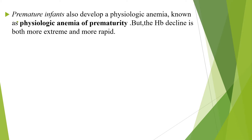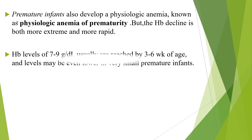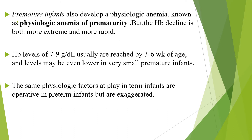Premature infants also develop a physiologic anemia, known as physiologic anemia of prematurity, but the hemoglobin decline is both more extreme and more rapid in premature babies than term babies. Hemoglobin levels of 7 to 9 g per dl usually are reached by 3 to 6 weeks of age, and the level might be even lower in very small premature infants. The same physiologic factors that play a role in term infants are operating in preterm infants, but this is more exaggerated in preterm babies.